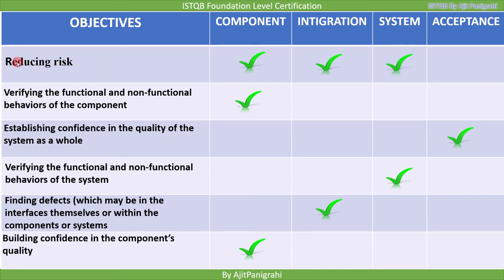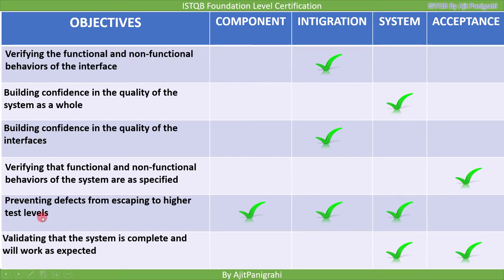A video exercise will be provided afterwards where one line at a time will appear — for example 'reducing risk' — and you identify at which levels it appears. Reducing risk comes at three levels but not at acceptance level. Building confidence should come at all levels. This exercise will help with the objectives for all test levels without having to memorize them line by line.